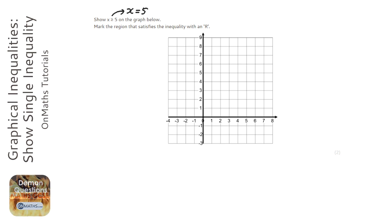If it can be equal to it, it's a solid line. If it can't be equal to it, it's a dashed line. So it's x equals 5 and I'm going to draw a solid line.